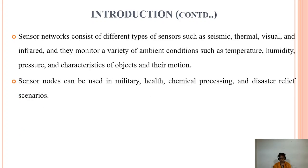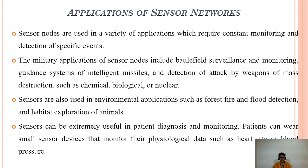Sensor networks consist of different types of sensors like thermal, visual, infrared, and seismic sensors, which are used to monitor various conditions such as temperature, humidity, pressure, and characteristics of objects and their motion. Sensor nodes can be mainly used in military applications, health issues, chemical processing, and disaster real-life scenarios.